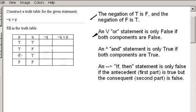So true, true, false, false, and then Q is going to be true, false, true, false.